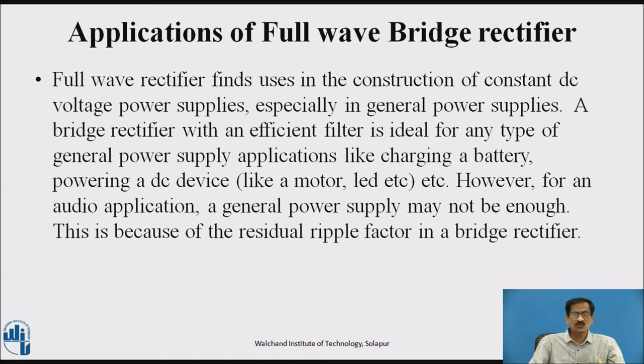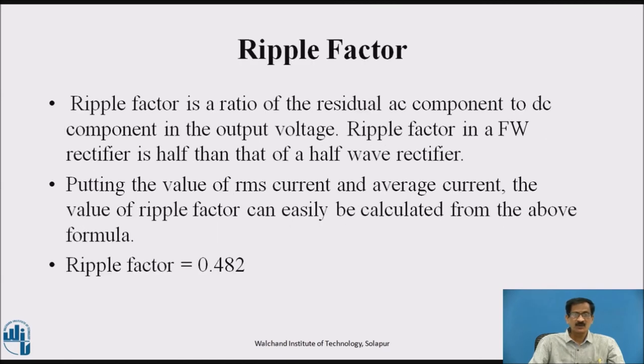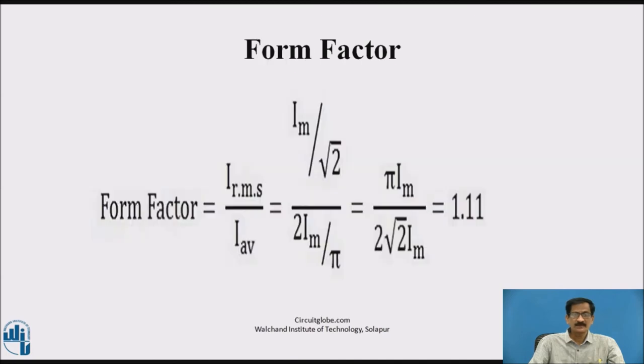Applications: it is used for the construction of constant DC voltage power supplies, especially in general power supplies. It is ideal for any type of general power supply applications like charging a battery, powering a DC device like motor or LED. However, for an audio application, a general power supply may not be enough. This is because of the residual ripple factor in a bridge rectifier. Ripple factor is the ratio of residual AC component to the DC component and it is 0.482. Form factor, again it is ratio of IRMS upon average, comes out to be 1.11.